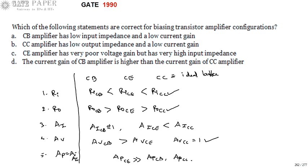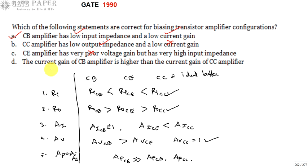Now checking the options: Option A — common base has low input impedance, which is correct, and low current gain due to unity current gain, so option A is right. Note that before 1995, questions may have multiple correct answers. Option B — common collector has low output impedance, which is true, but it does not have low current gain; it has the highest current gain, so B is wrong. Option C — common emitter does not have very poor voltage gain, so C is wrong. Option D — the current gain of common base is not higher than common collector, so D is also wrong. The answer is option A only.